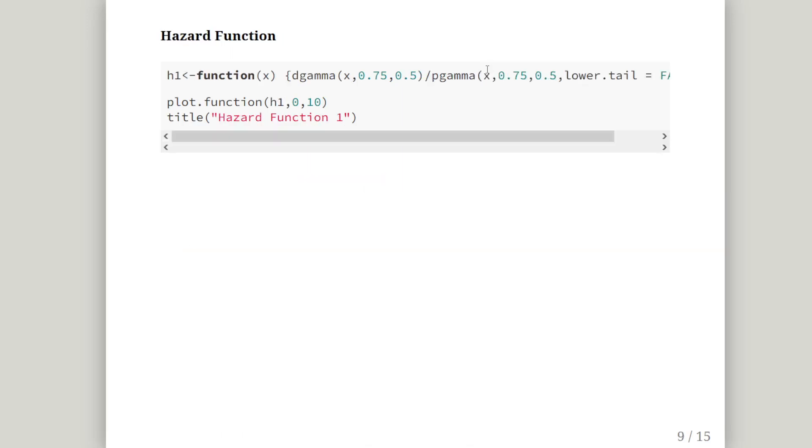Now what we're going to do is set up a hazard function. I'm going to give this multiple names because we're going to have to plot some more hazard functions. In this first case I'm going to call it H1, Hazard function 1. So D gamma with our arguments divided by P gamma with our arguments, lower tail equals false. So that is the survival function, and that is the density function.